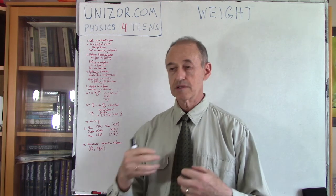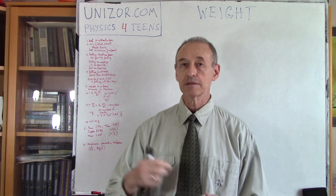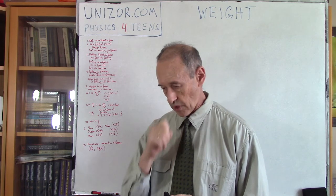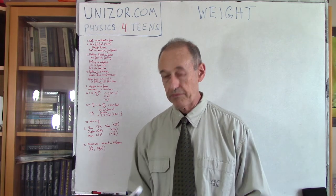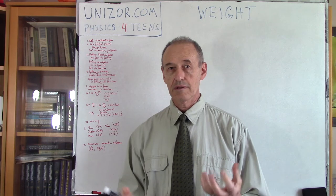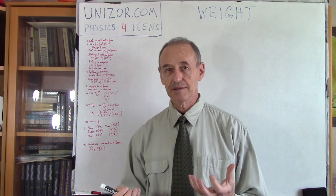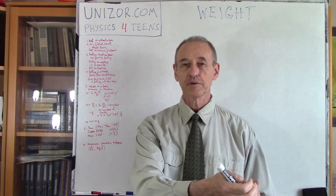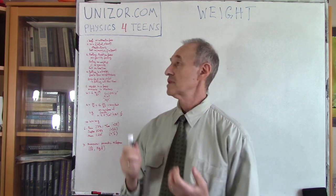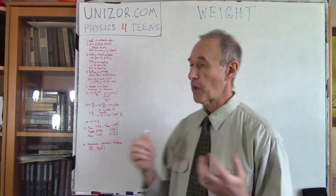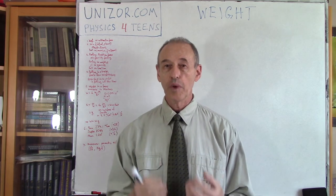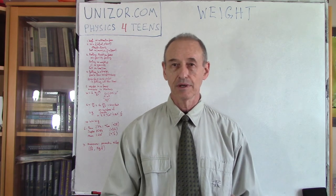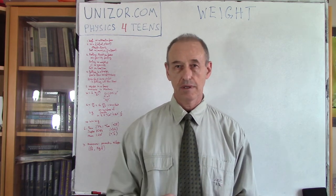The weight of the object is the force of the gravity of the planet extended towards this particular object. So it's a function of two things: the object itself and the planet. If you change the planet — put the same object on a different planet — it will weigh differently. Weight is not absolute. Weight is always related to the certain planet this weight is positioned upon.